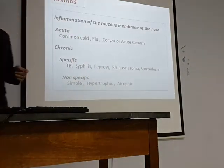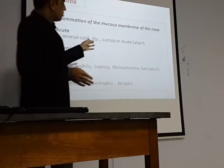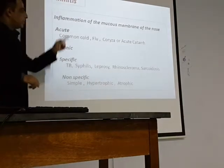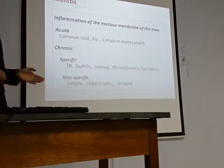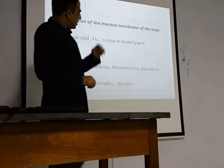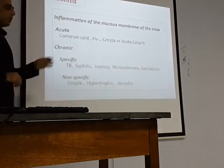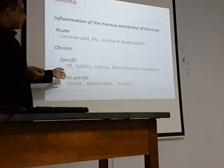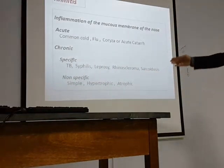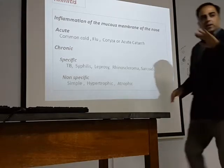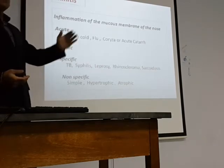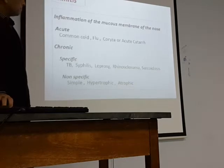Chronic rhinitis can be specific - when you know the organism - like tuberculosis, syphilis, scleroma, leprosy, or sarcoidosis. Non-specific is when you don't know the organism and can be of various types: simple (no change in mucosa), hypertrophic (hypertrophy of mucosa), and atrophic (atrophy of the mucosal cells). Rhinitis can thus be acute or chronic.